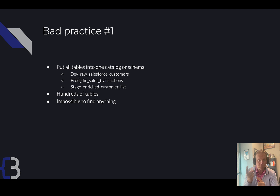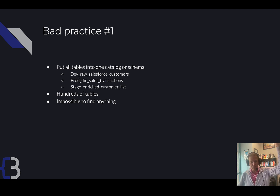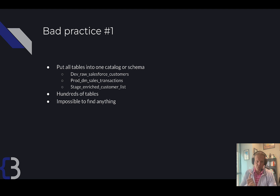Here's the first bad practice: putting all the tables into one schema and naming the tables dev, stage, and production — or naming them raw, CDM, and data mart. You get really long table names and thousands of tables, making it almost impossible to figure out where the data you care about is. It's really confusing to users, and if a developer names something incorrectly it becomes even more challenging. That's a terrible practice.